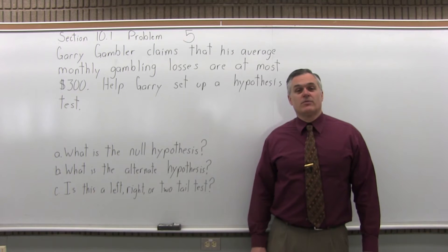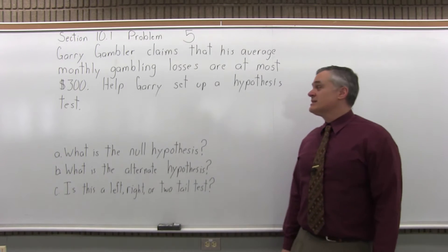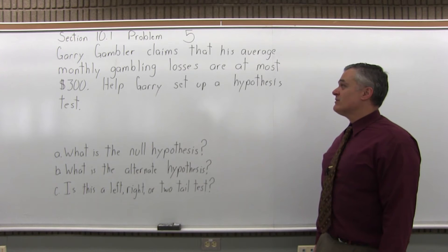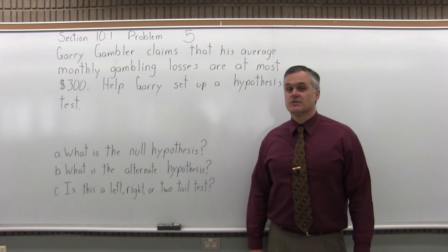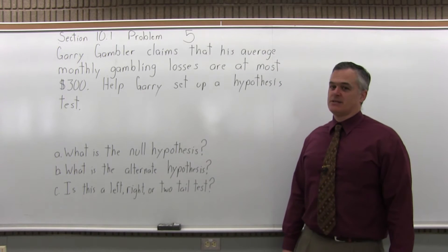This is Section 10.1, Problem number 5. Gary Gambler claims that his average monthly gambling losses are at most $300. Help Gary set up a hypothesis test.